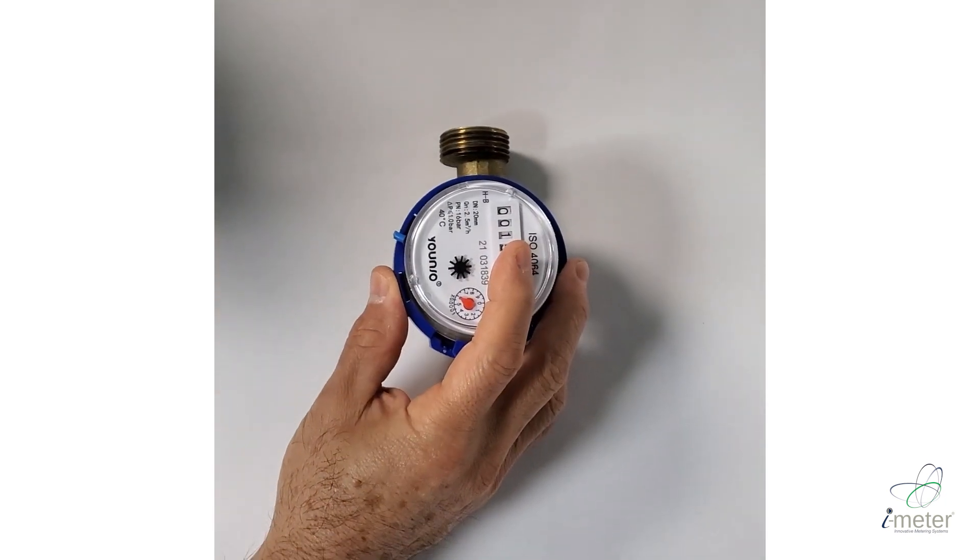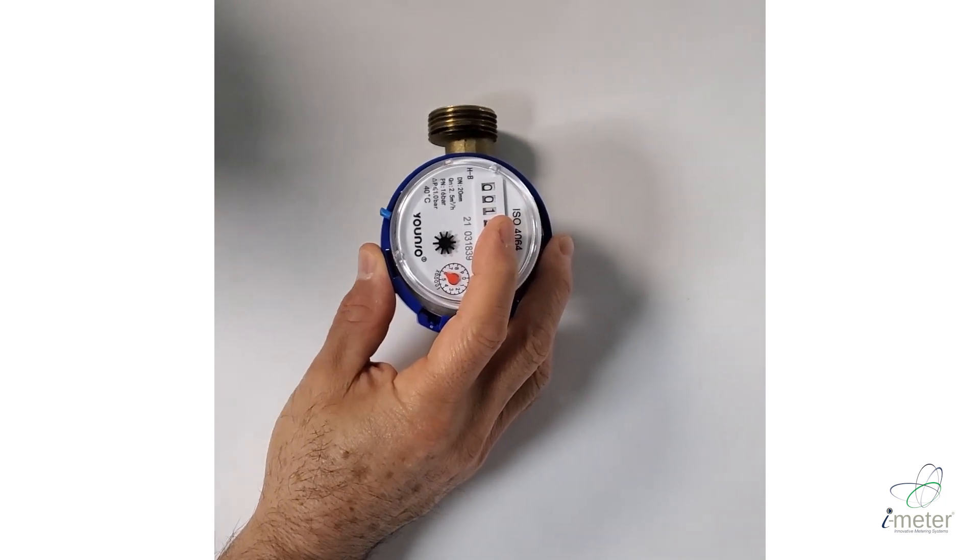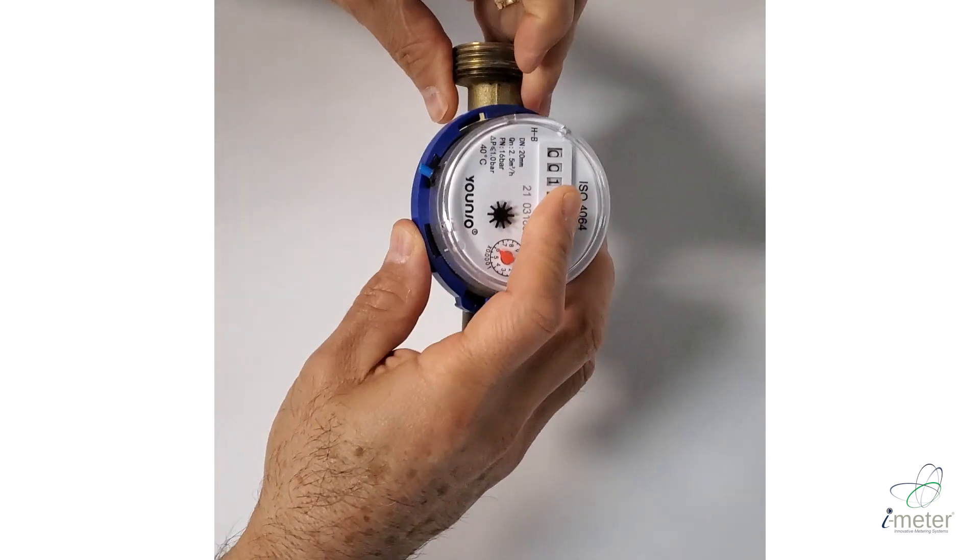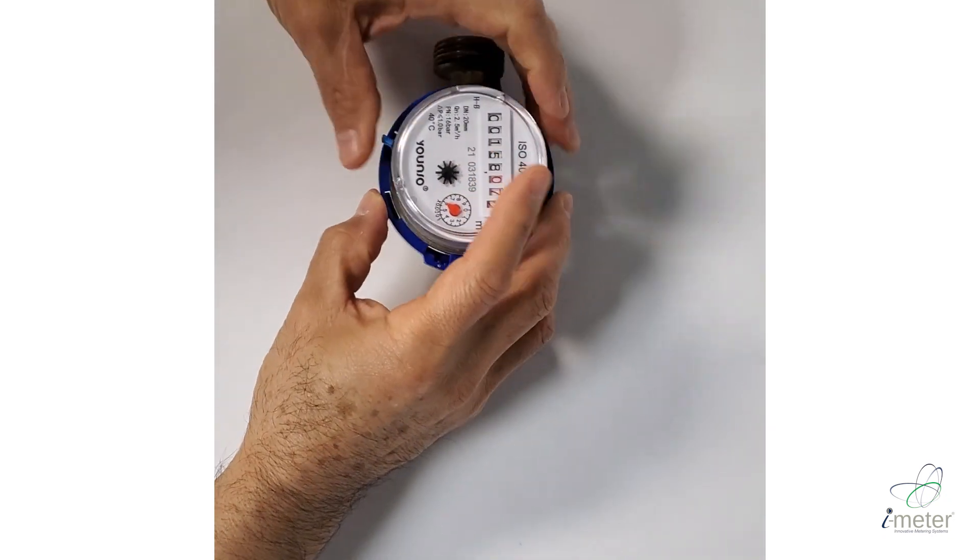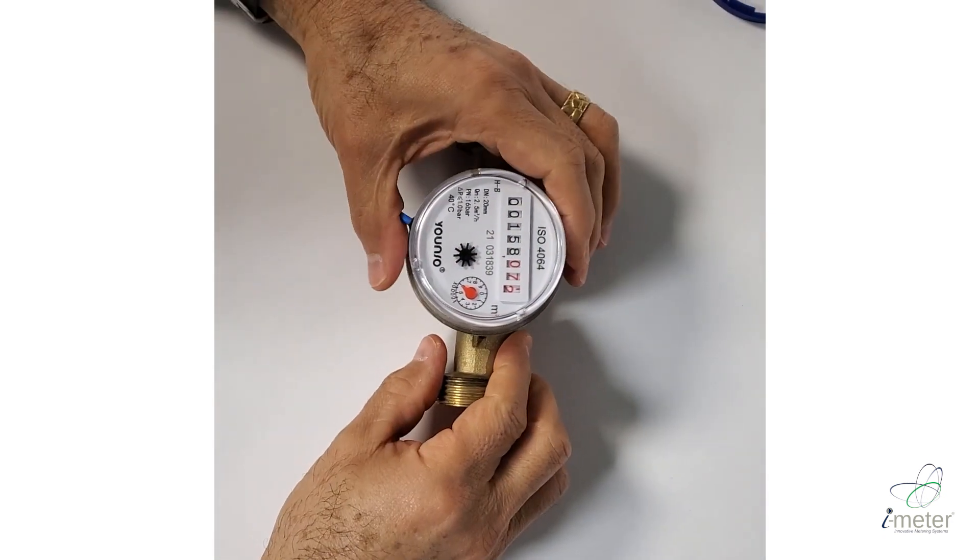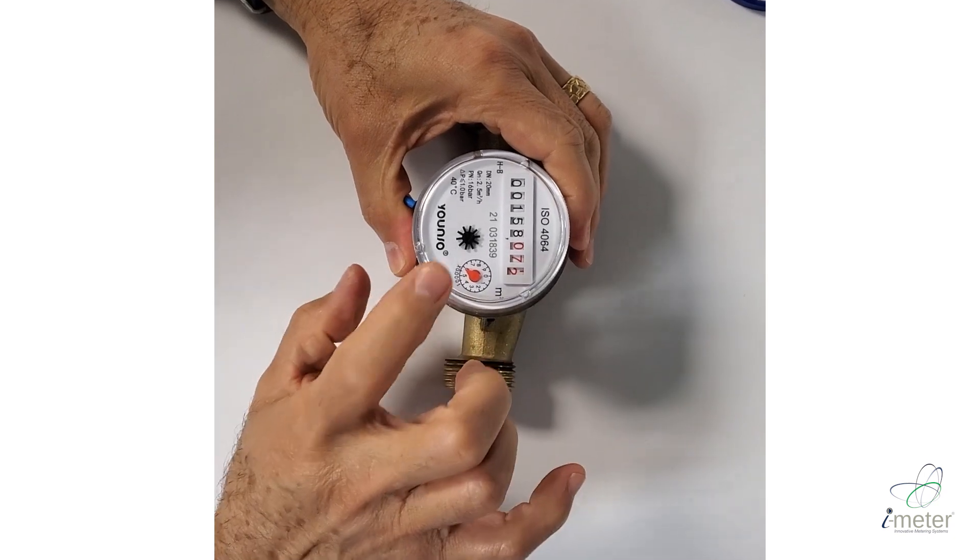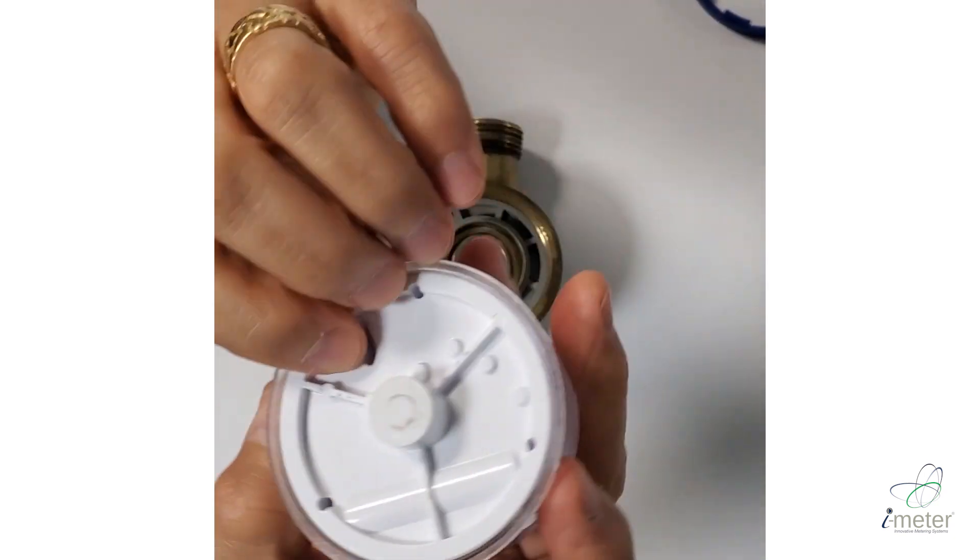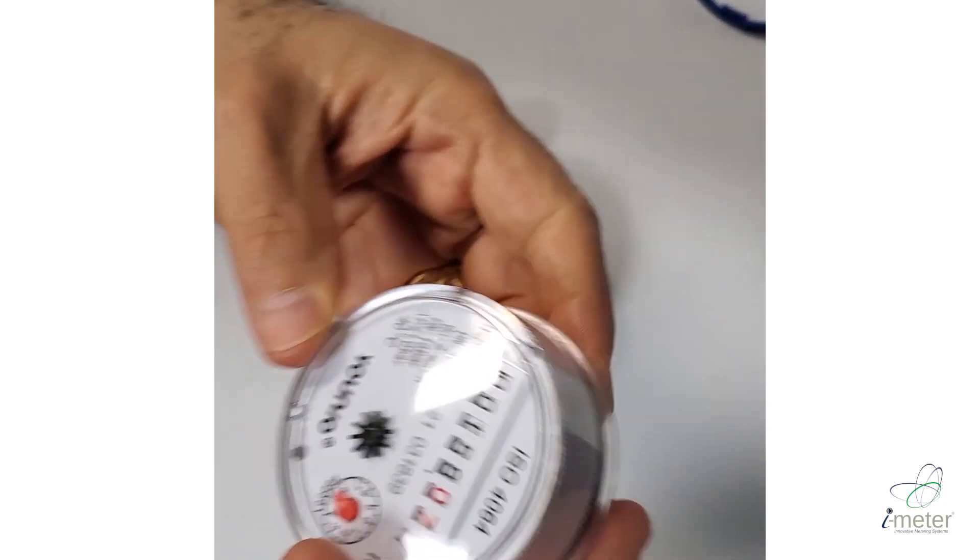This video will explain why we don't put the meters upside down and the meters have to be right side up. So we're going to remove the cover of the meters and we have to remember that our meters are a dry tile, that means that the tile is encapsulated and it's totally separate from the water cavity.